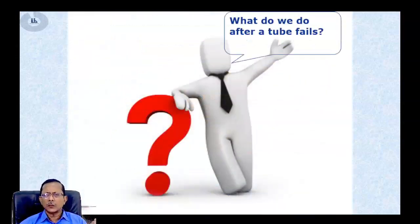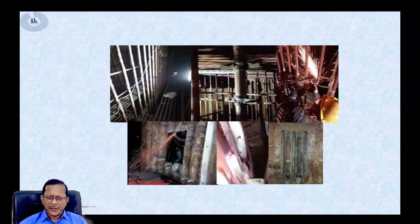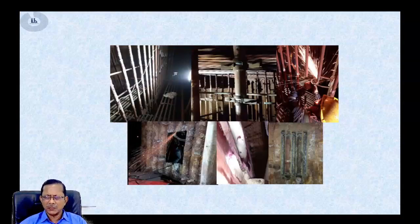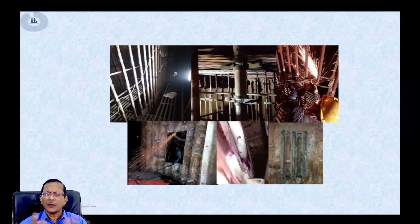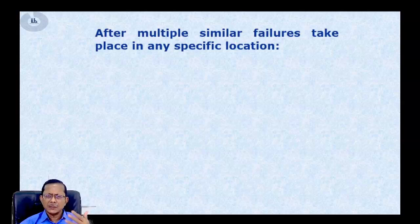The question is: what exactly do we do after a boiler tube fails? Very honestly speaking, when there is a tube failure, we identify the tube failure, create access to the tube, cut the tube, replace the tube as quickly as possible, and bring the system back into operation. That is what we generally do after a tube failure.